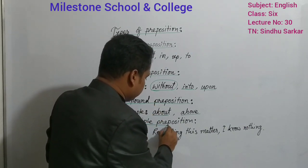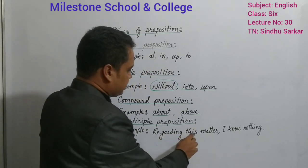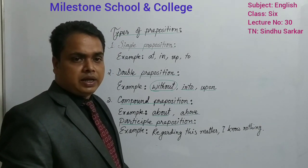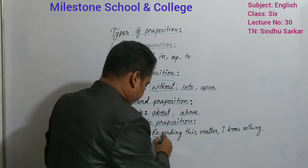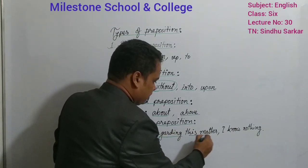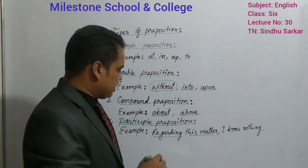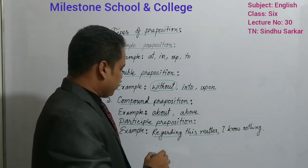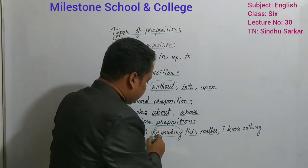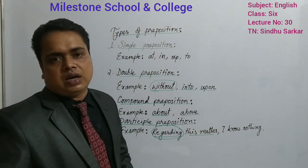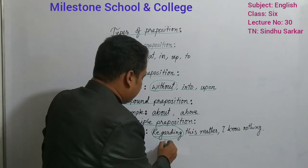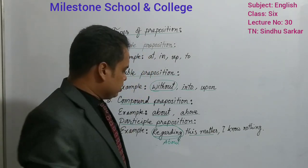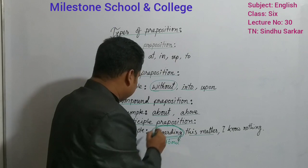Then, participle preposition. The example is: 'regarding this matter, I know nothing.' You know participle — whenever verb plus -ing is acting as an adjective. Here, because it is used before noun 'this matter,' it is an adjective. At the same time, you are getting verb plus -ing, so it is a participle. But instead of this participle, you can use a preposition also — you can write 'about.' So, 'about this matter, I know nothing.' This type of participle will be called participle preposition.